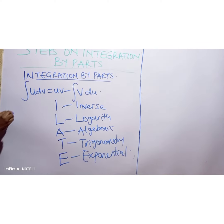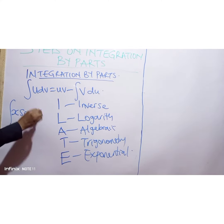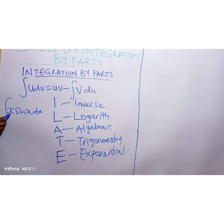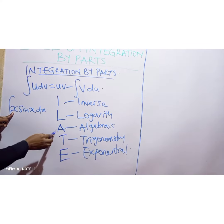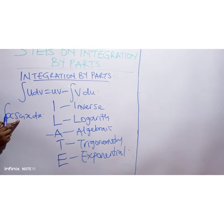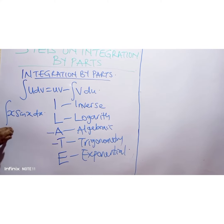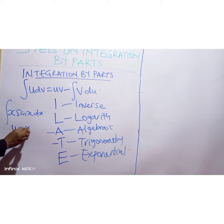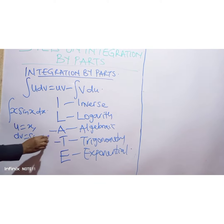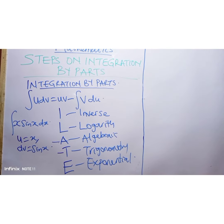For example, if you want to integrate x sin(x), you see x here — this is algebraic, which is number three in ILACE. Trigonometry is number four. That means x will be your u and sin(x) will be your dv. That is how to apply integration by parts. See you in the next class, bye.